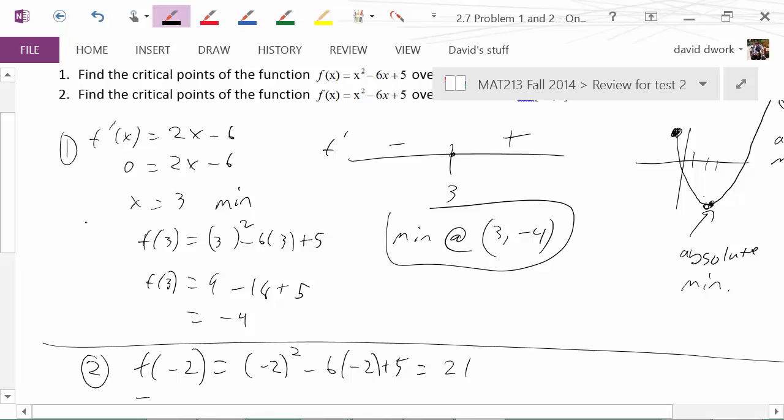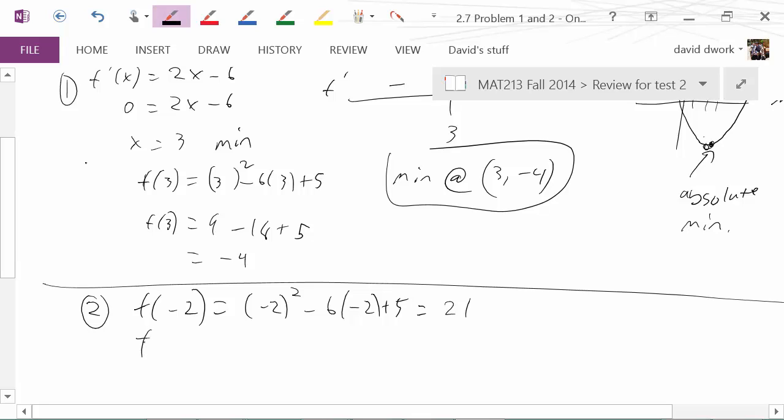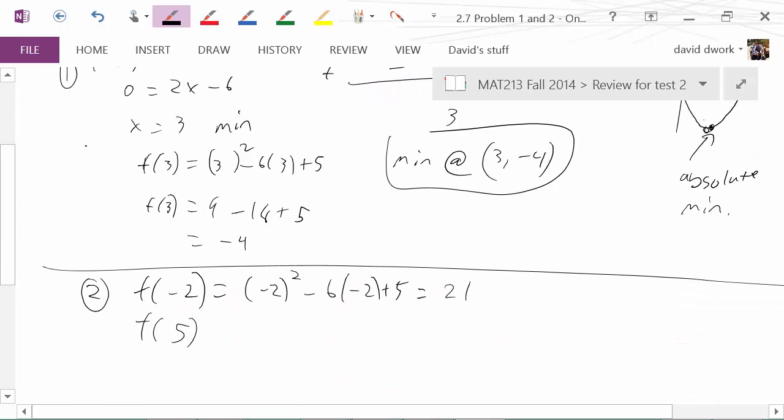And then I have to do the same thing for the other endpoint, which I believe I said was 5. I'll give it a check right here. Yes, negative 2 and 5. Therefore I will substitute that into the original equation. We're going to end up getting out 0.